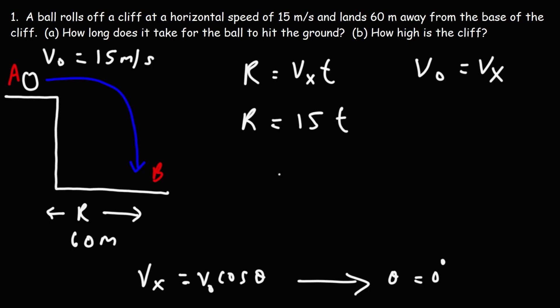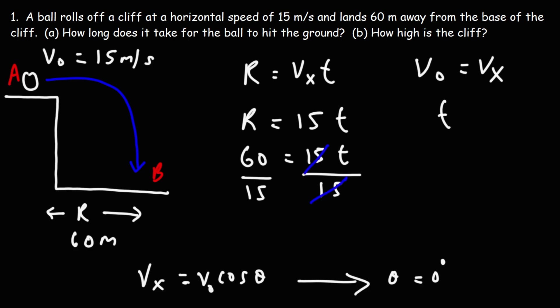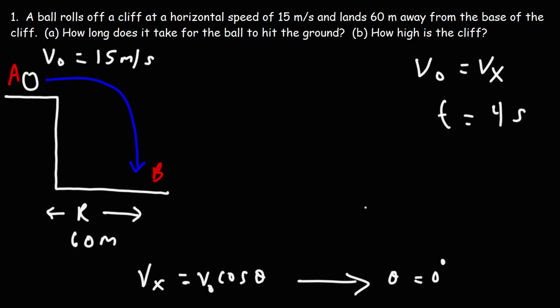We need to calculate t. The range is 60, so to calculate t we divide both sides by 15. So t equals the range divided by vx: 60 divided by 15 gives us 4 seconds. That's the answer for part A — that's how long it will take for the ball to hit the ground.